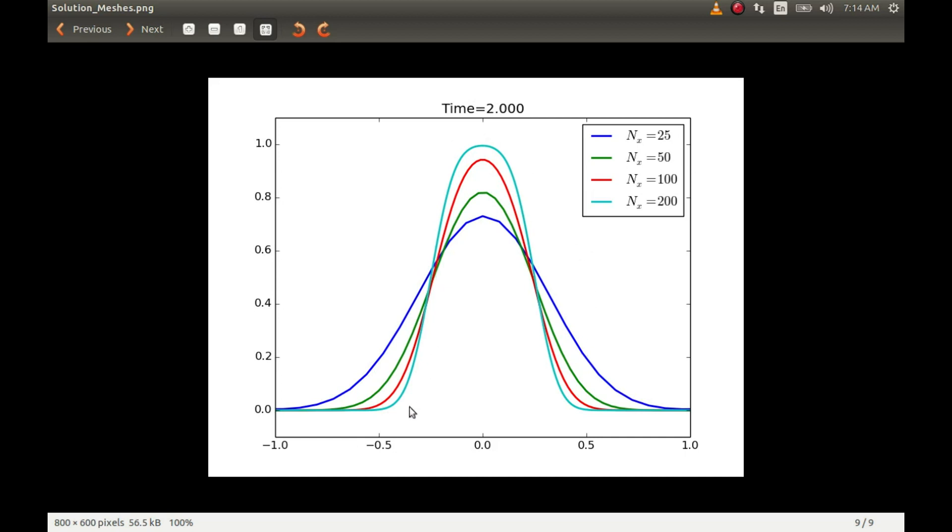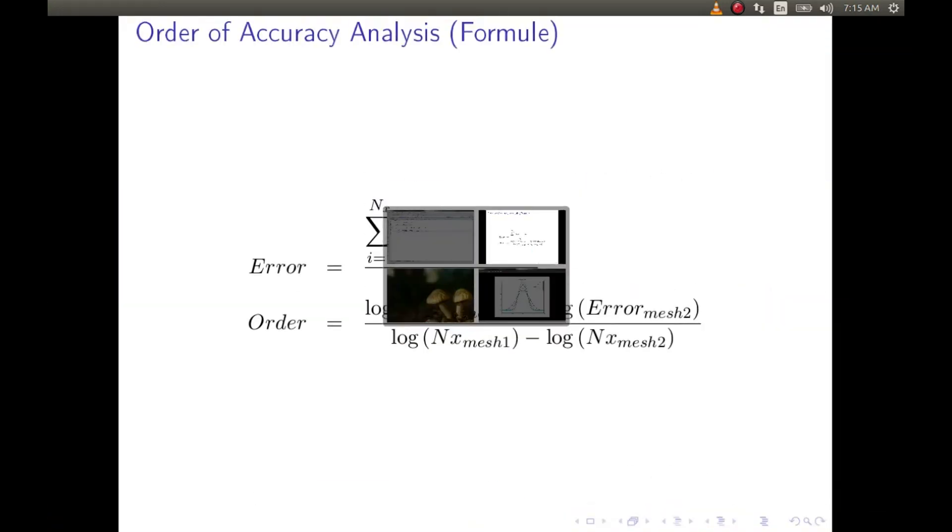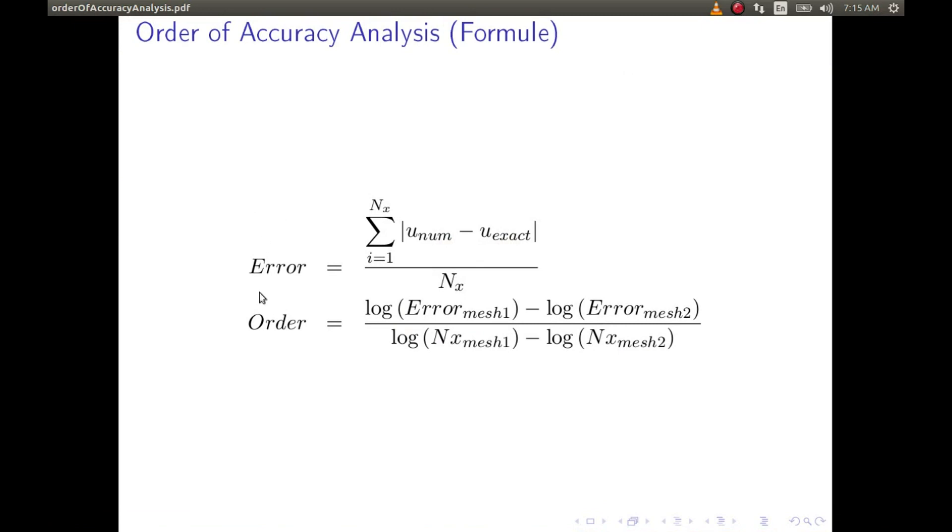So this is as much as we can do visually. However it's much more better to look at this analysis numerically. So to do that we will look at the order of accuracy analysis. In this analysis we will be using a couple of formulas. The error being the L1 norm divided by the number of cells, and the order of accuracy will be defined as the slope of the line on the log-log plot of error plotted versus the number of cells. In many of the papers you might have seen instead of nx they use delta x. However it does not matter, only the sign of the order of accuracy what we get will change, otherwise it does not matter.